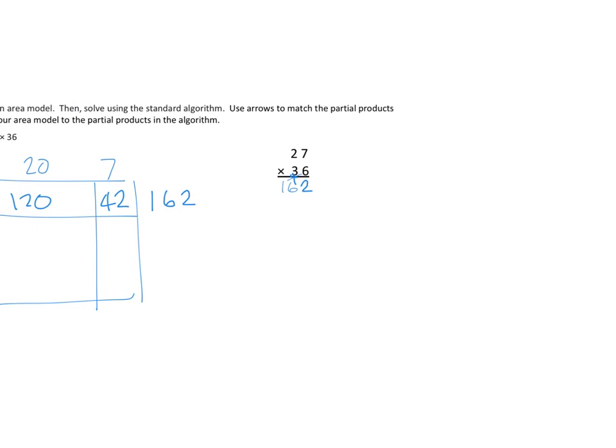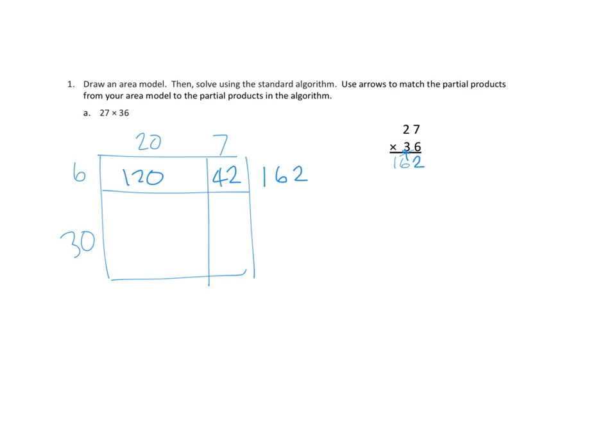And we cross out that 4 to indicate that we've used that up. And let's zoom that back out. Look at that. We've got our first partial product, right? In our area model, we came up with 162. And in our standard algorithm, we came up with 162 as well.